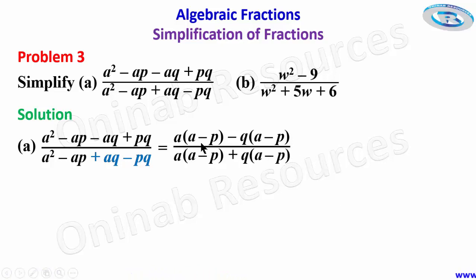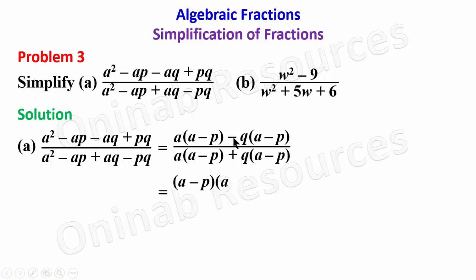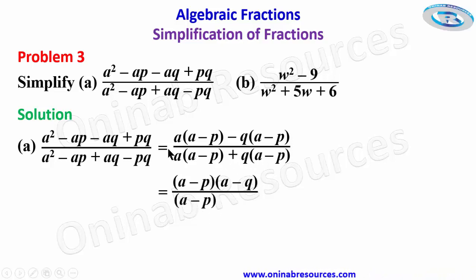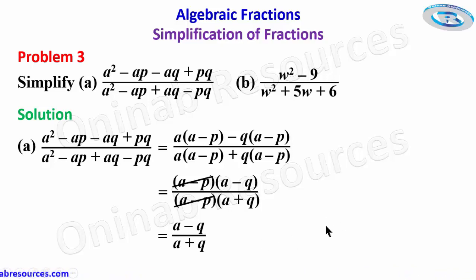Completing the factorization: the numerator becomes (a − p)(a − q) and the denominator becomes (a − p)(a + q). The (a − p) cancels with (a − p), so the final simplified answer is (a − q) over (a + q).